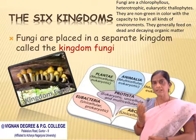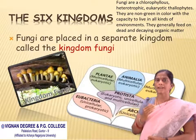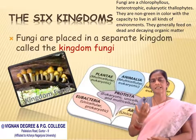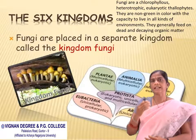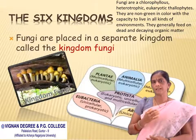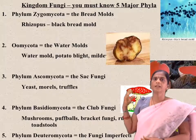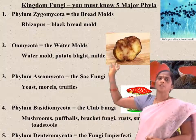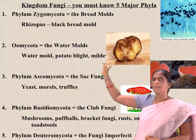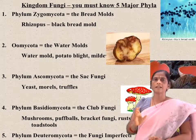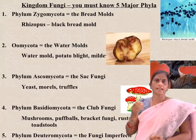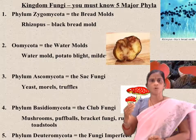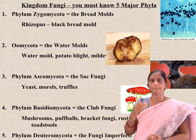They are non-green in color with the capacity to live in all kinds of environments. They generally feed on dead and decaying organic matter. Coming to the phyla of fungi — Zygomycota is called bread mold; the example is Rhizopus, also known as black bread mold.